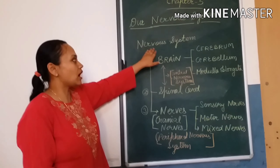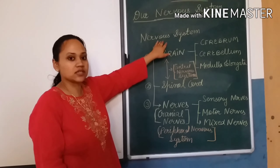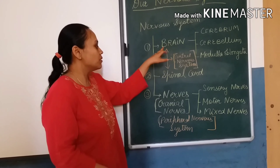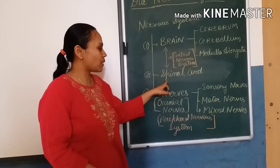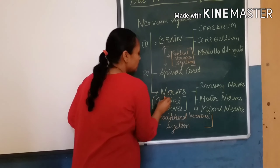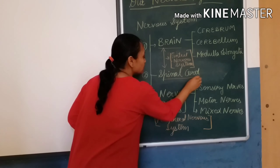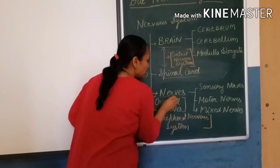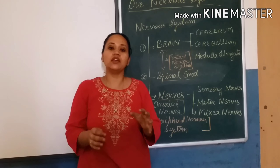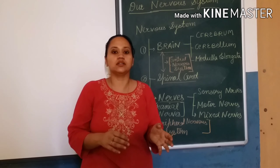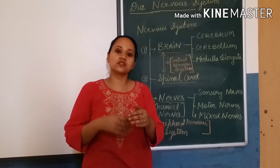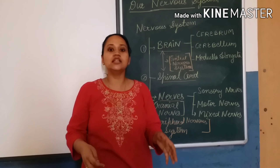So let me start: the nervous system comprises three things — brain, spinal cord, and nerves. These three things work on their levels, like in a school there are principals, vice principals, coordinators, and teachers.